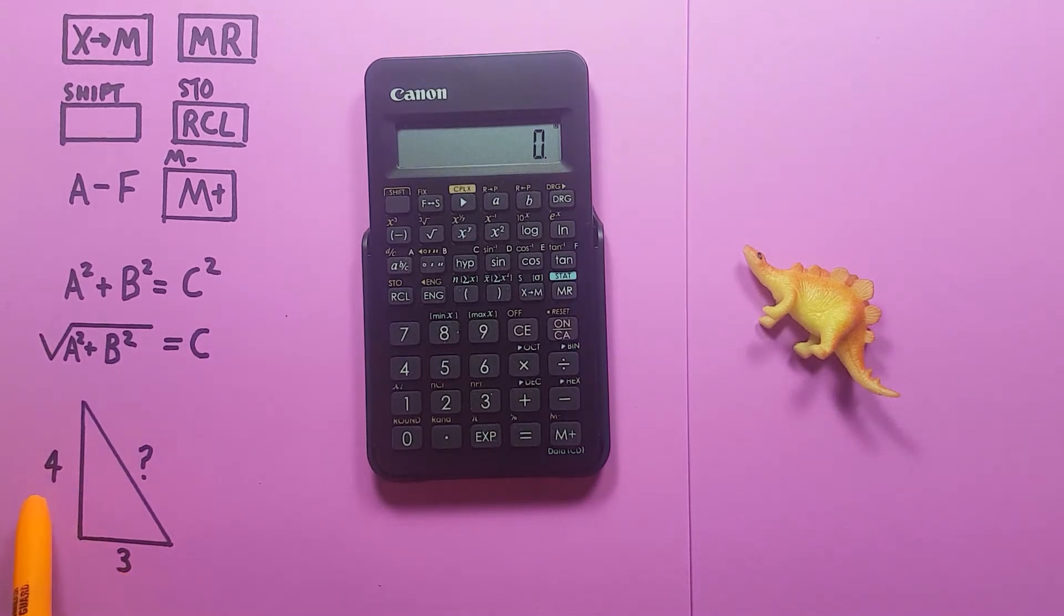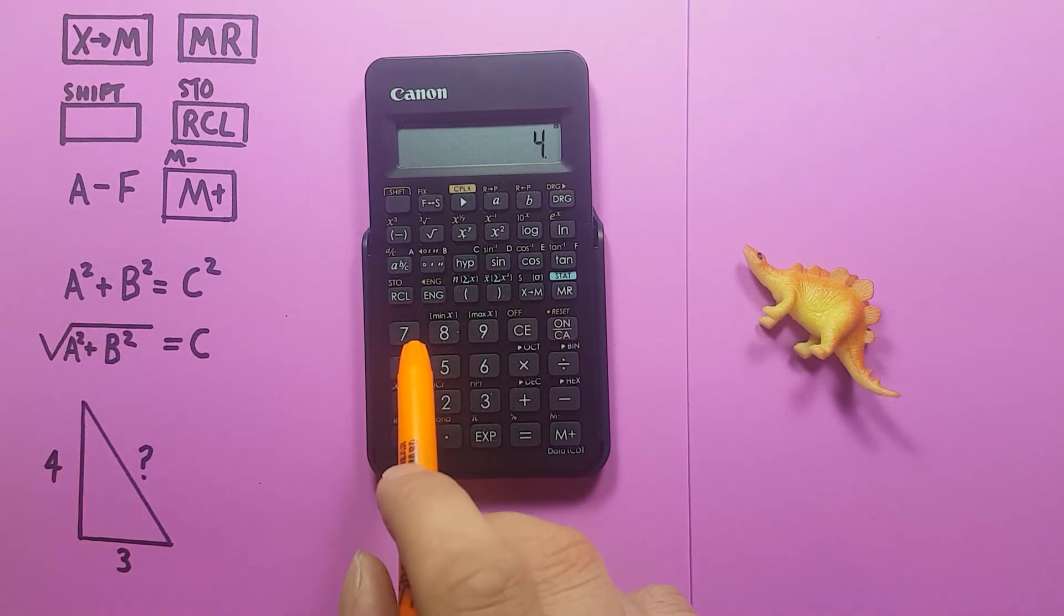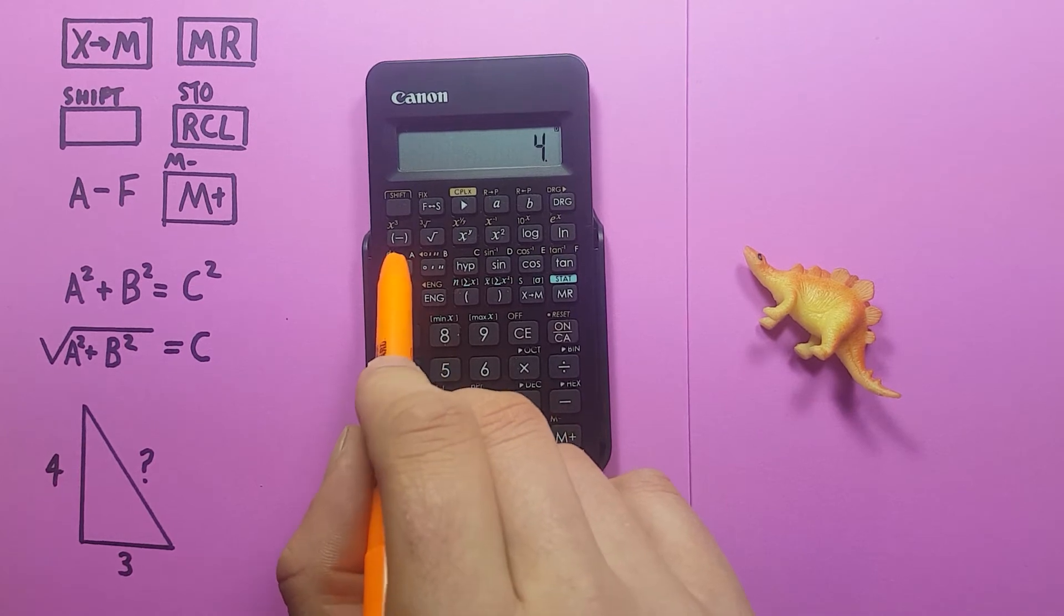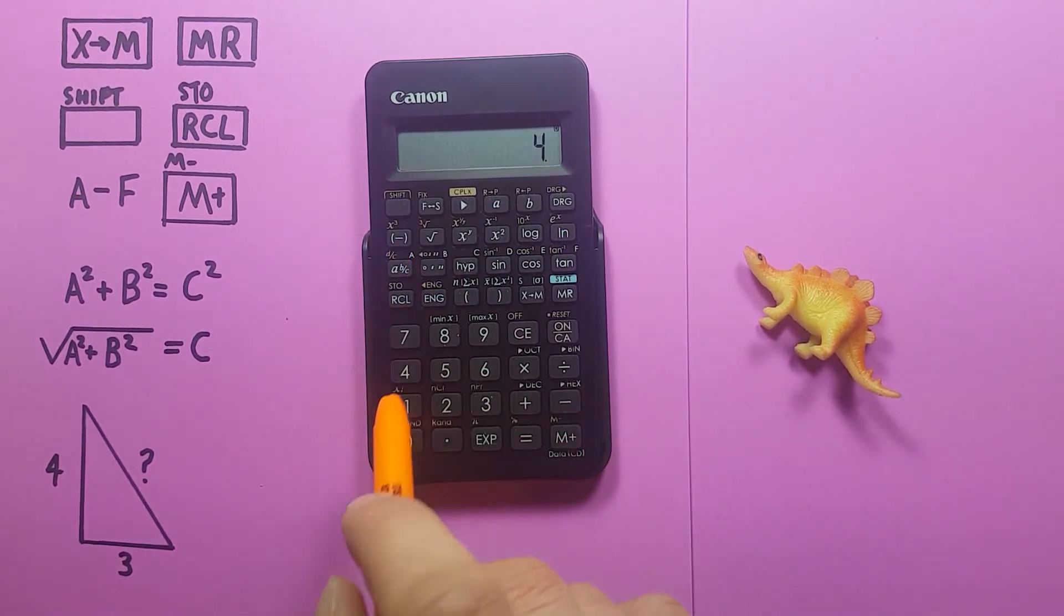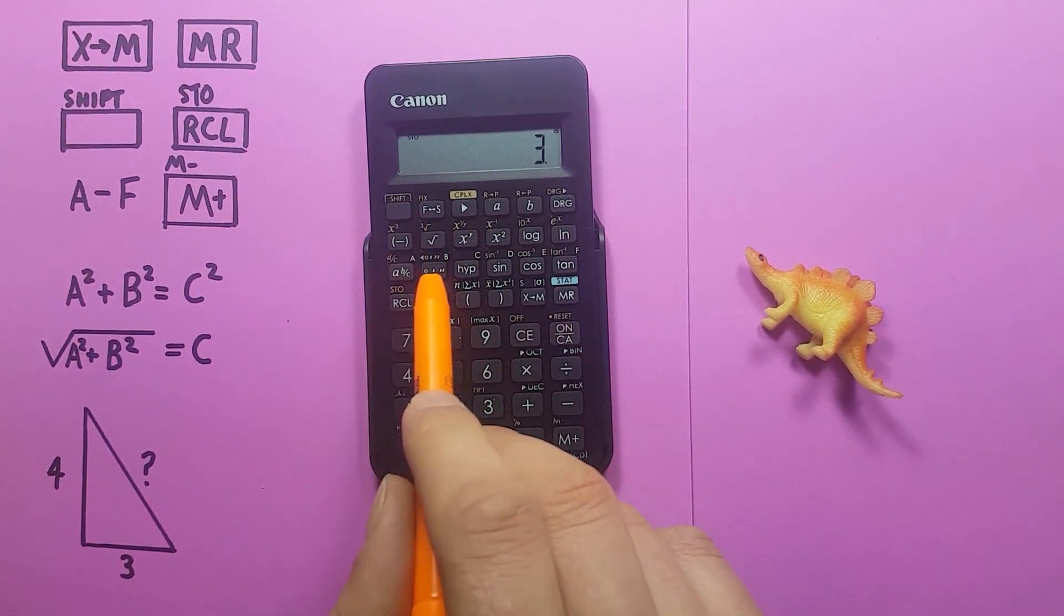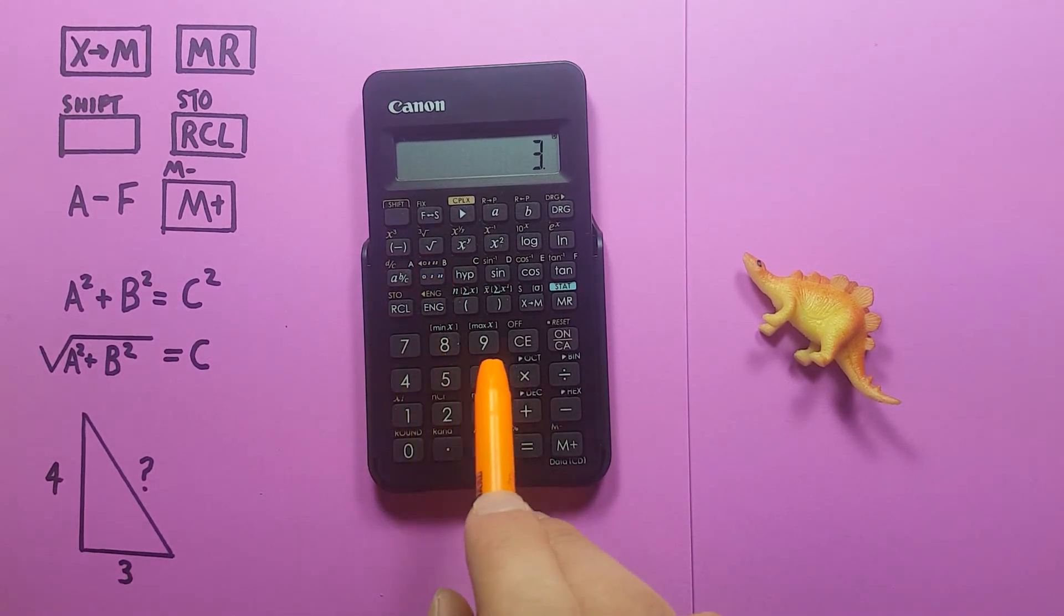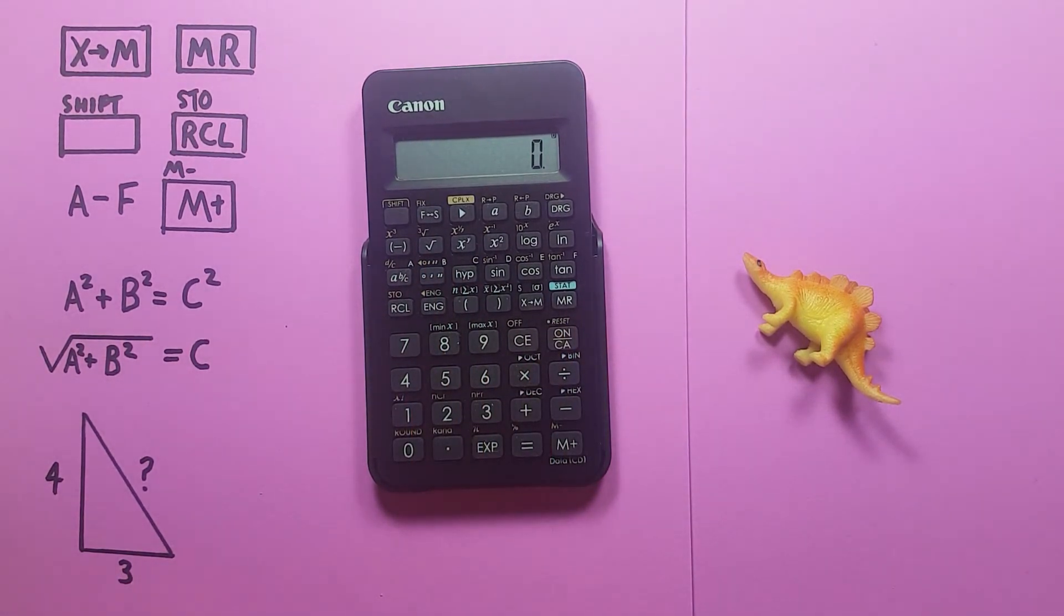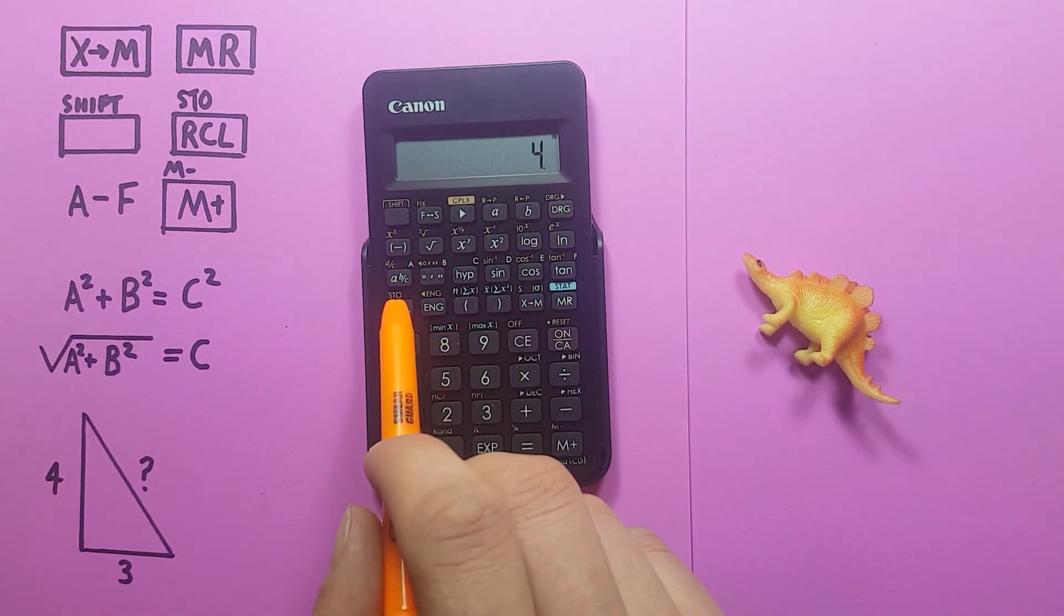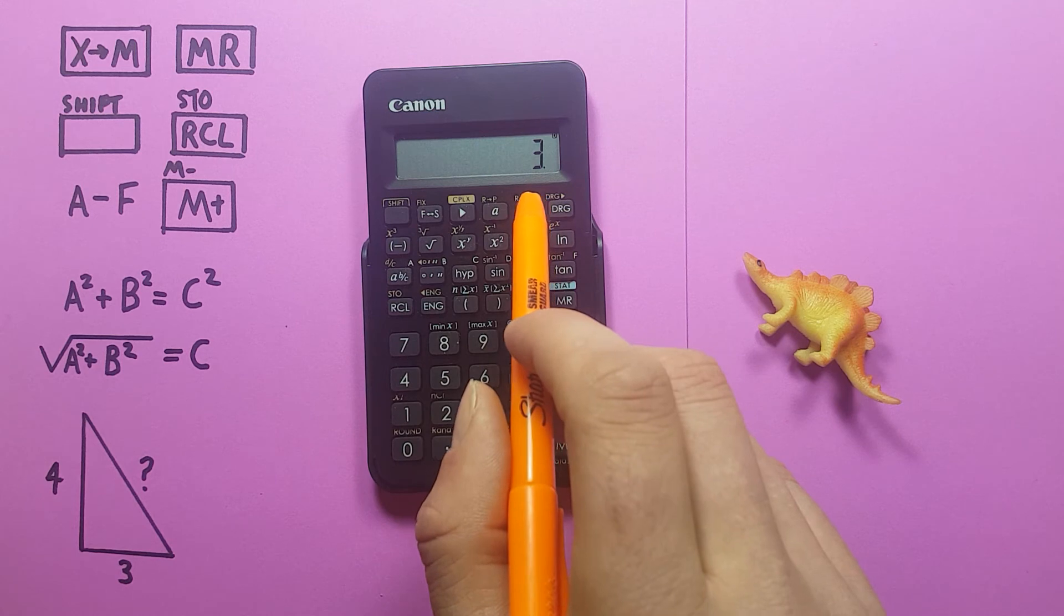We start by storing our 4 as A so we place 4 on the screen. Shift store A and then we have our B side of 3. Place 3 on the screen. Shift store B. Let's confirm we have those stored so we can recall A, there's our 4. Recall B, there's our 3.